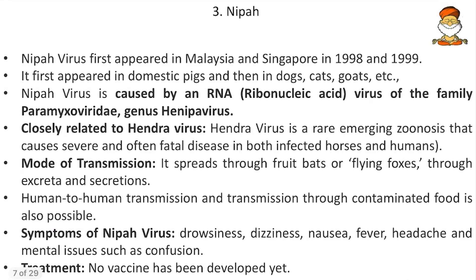Next, Nipah virus. It first appeared in Malaysia and Singapore in 1998–1999, and first appeared in domestic pigs and then in dogs, cats and goats. Nipah virus is caused by an RNA virus of the family Paramyxoviridae and genus Henipavirus. It is closely related to Hendra virus, which is a rare emerging zoonosis causing severe and often fatal disease in both infected horses and humans.